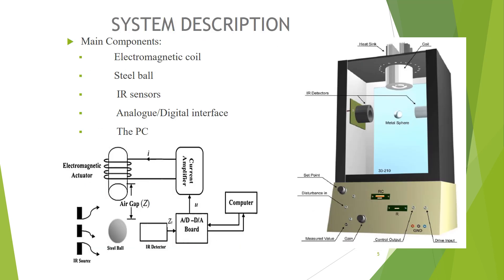This is the description of the hardware setup used for experimental purposes in this research work. The instrument is manufactured by Feedback Instruments. The main components are electromagnetic coils, steel ball, IR sensors, analog-digital interface, and the PC. When current passes through the electromagnetic coil, a magnetic field is produced which attracts the ball in the upward direction. The gravitational force tries to pull the ball in the downward direction. When equilibrium is reached between the magnetic force and the gravitational force, the ball levitates in the air. The ball position is measured by the IR sensor, which is fed back to the computer through the analog-digital board as a feedback signal.